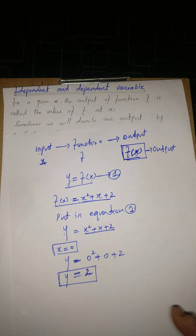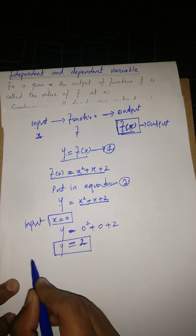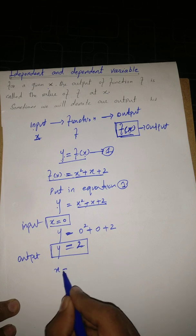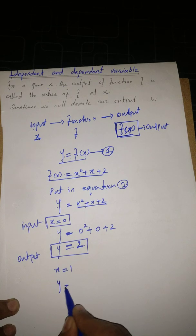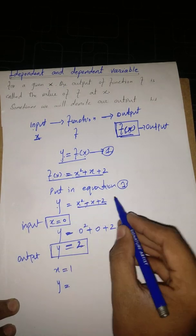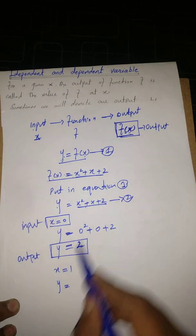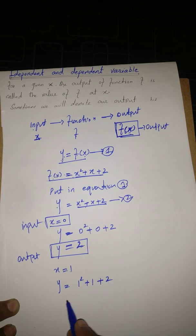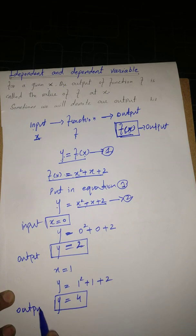Now let's put another value of X as input. Let X equal to 1 and see what our output is. When we put X equal to 1 in the equation, we get 1 squared plus 1 plus 2, which after simplification equals 4. So that is our next output.